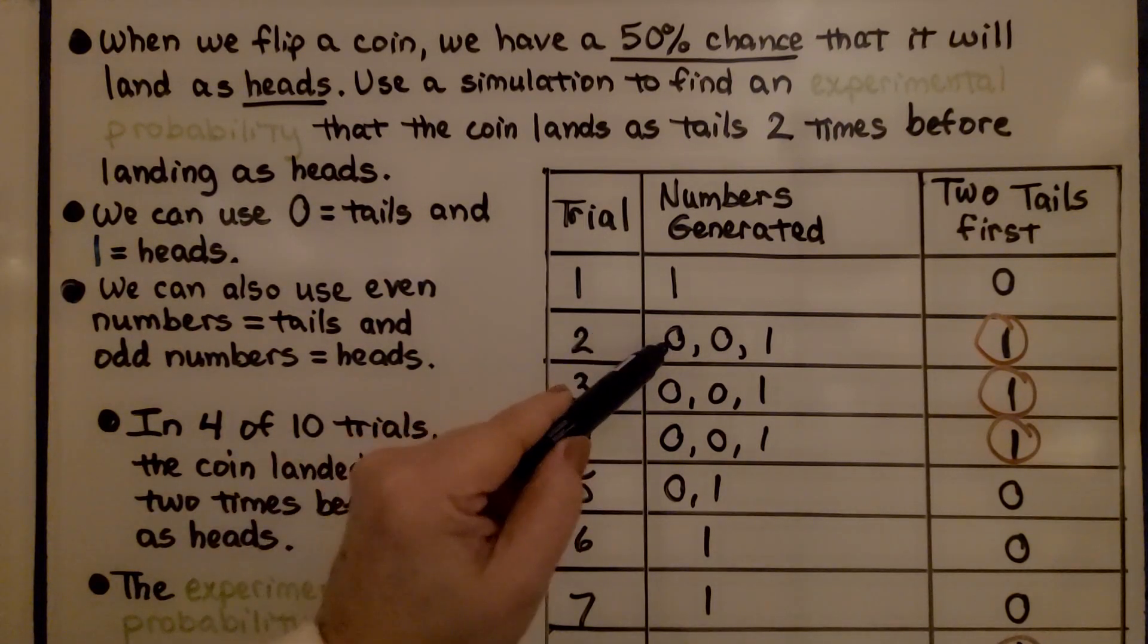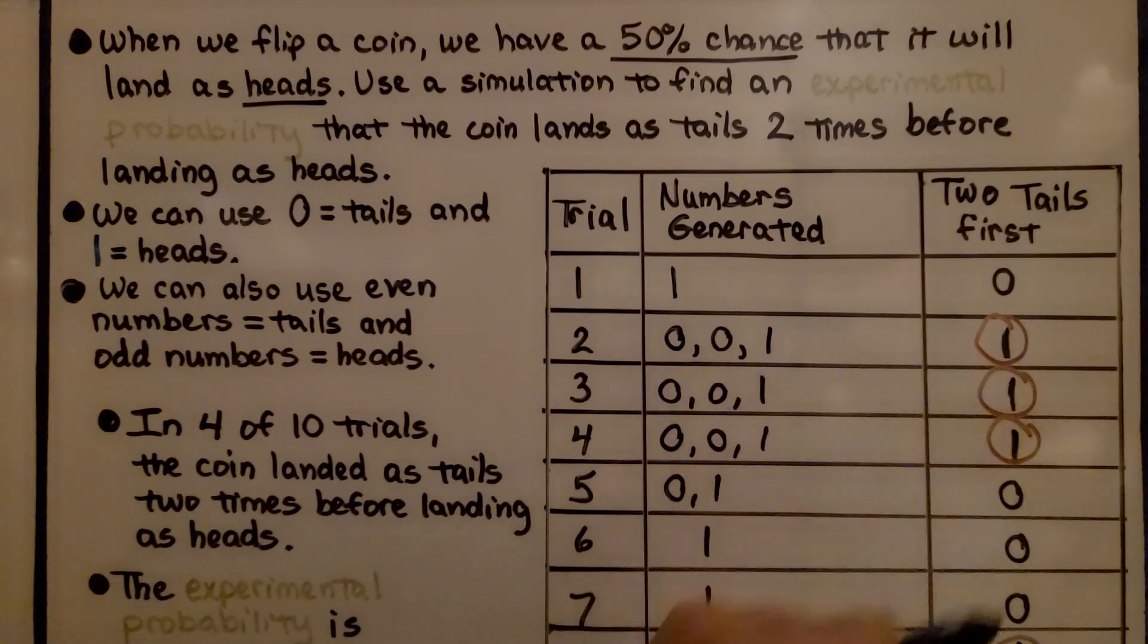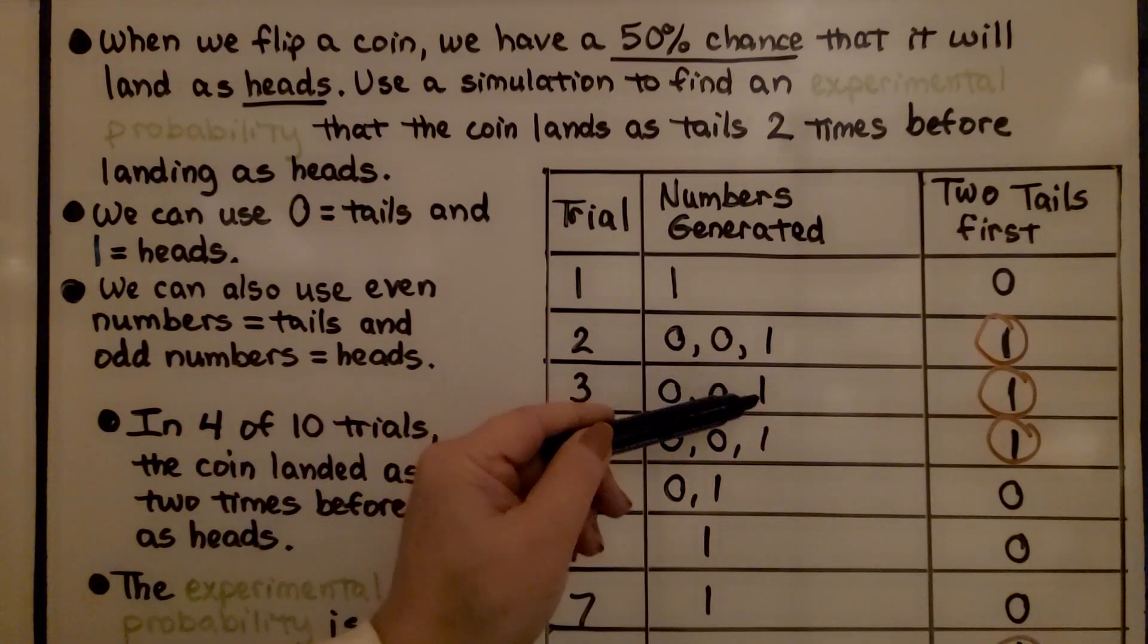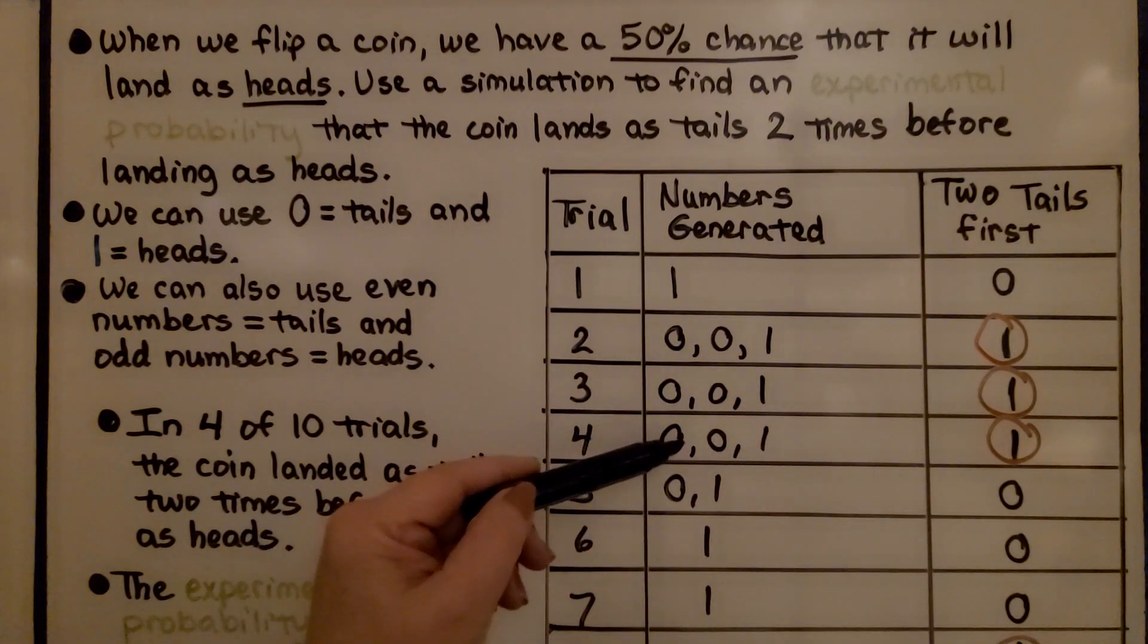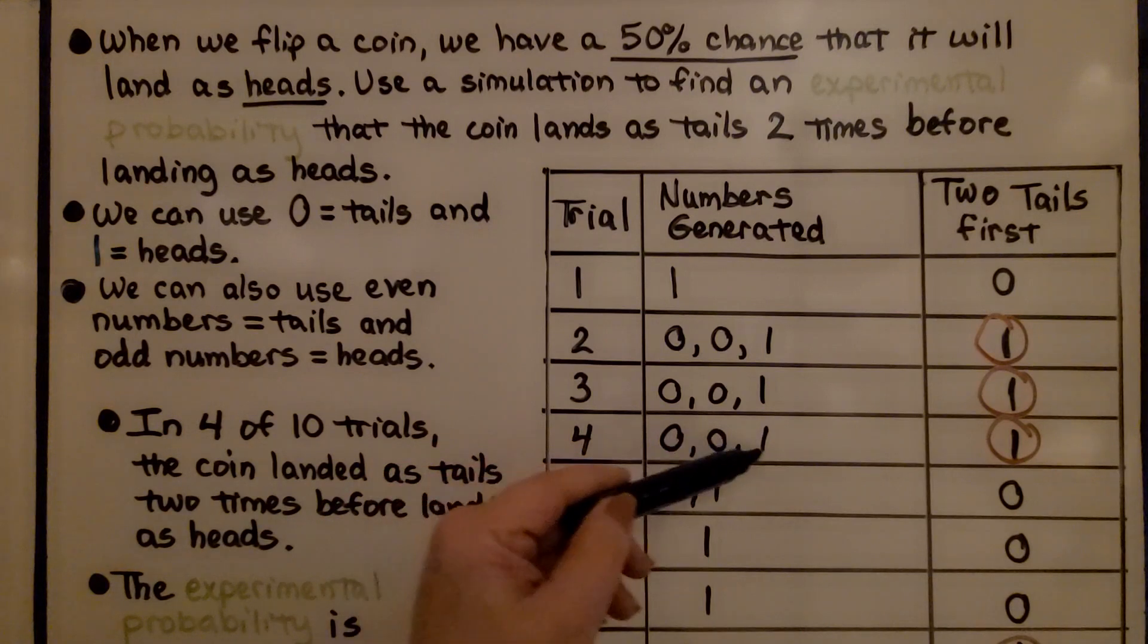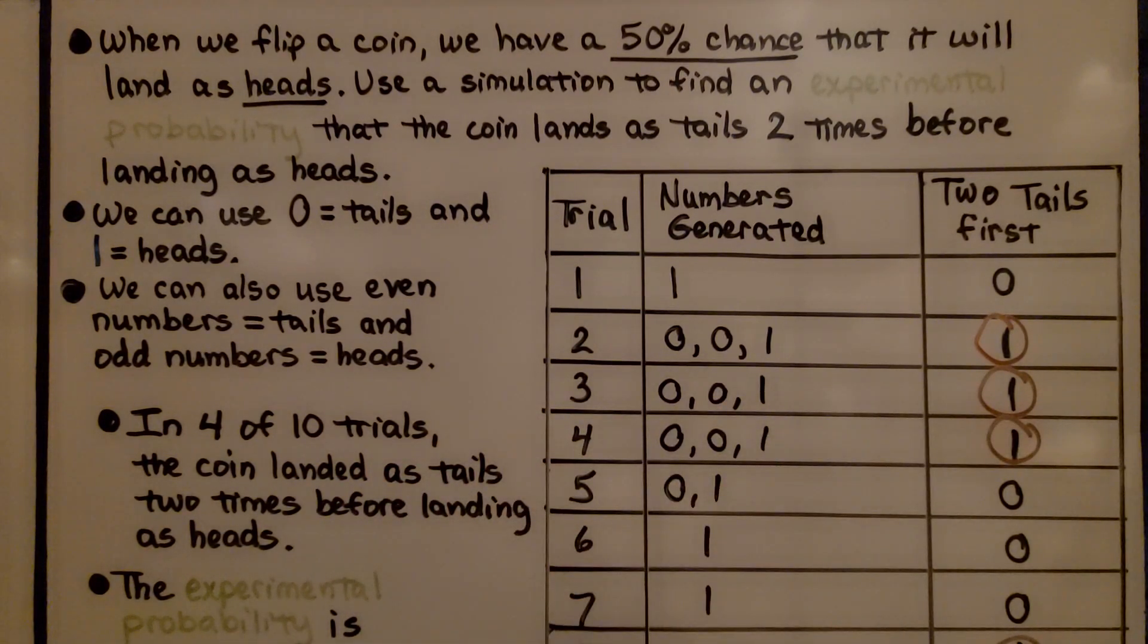Well, the next trial I did, I did get 2 zeros and a 1. So, I have 1 now for 2 tails first. I did it again the very next trial. So, I have another one. And it was strange, but I did it again the third one in a row for 2 tails first.